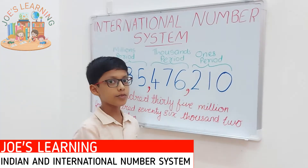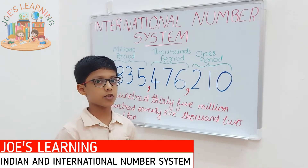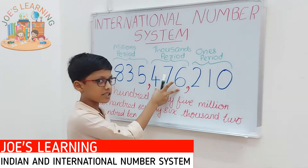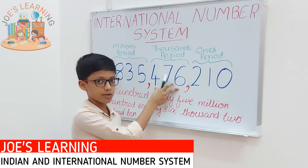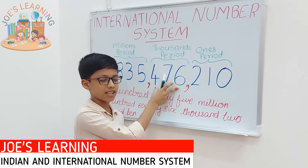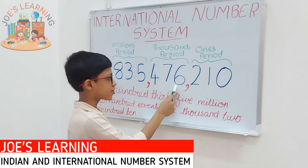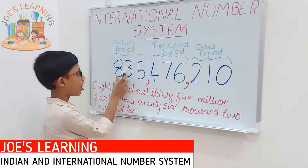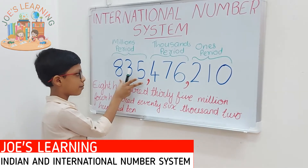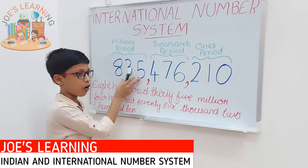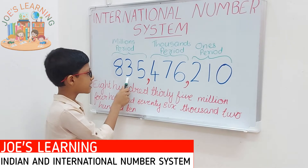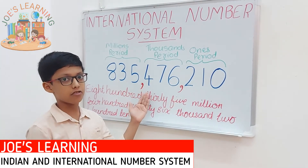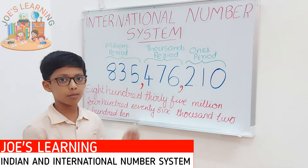In this number, the first three digits are in the ones period. The ones period consists of ones, tens, and hundreds. The next three digits are in the thousands period, which consists of thousands, ten-thousands, and hundred-thousands. The next three digits are in the millions period, which consists of millions, ten-millions, and hundred-millions.